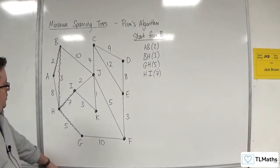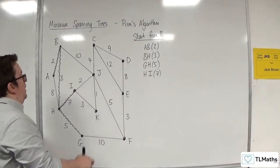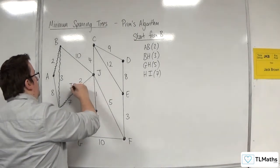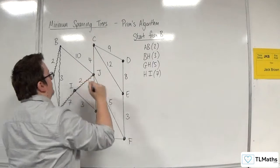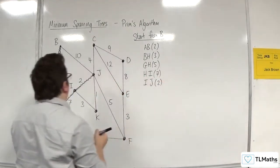The next shortest edge coming out of any of those vertices that we've already gone to would be this 2, so IJ. We'll pick that one.